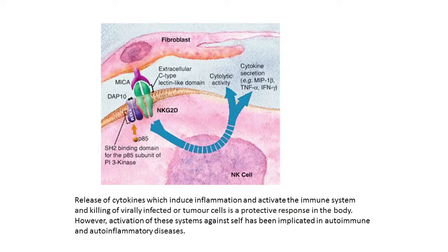Once the activating signal comes through NKG2D, you get an increase in the cytolytic activity of the NK cell — in other words, it will kill the target cell. It will also lead to the secretion of cytokines, which are signals between cells in the immune system and other cells in the body. These cytokines include things like tumor necrosis factor, for which there are inhibitors that are very useful in diseases such as rheumatoid arthritis, something that will be touched on by later speakers.